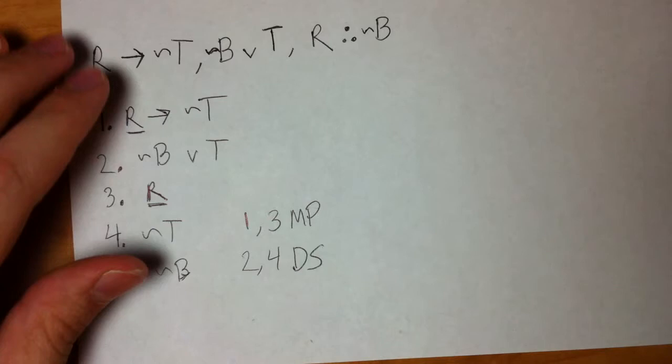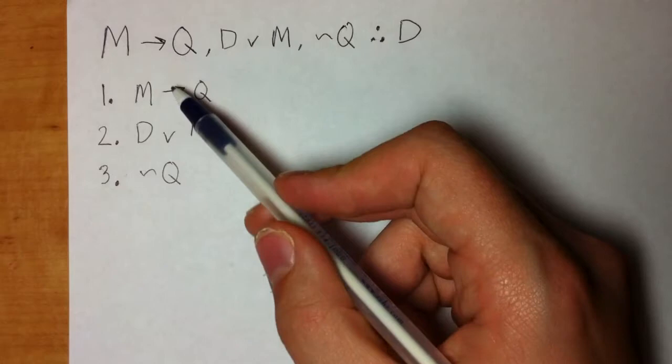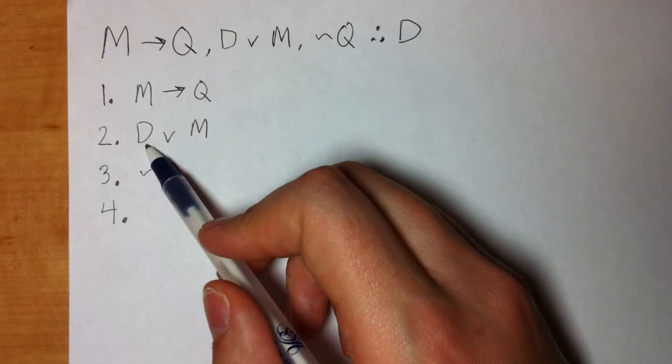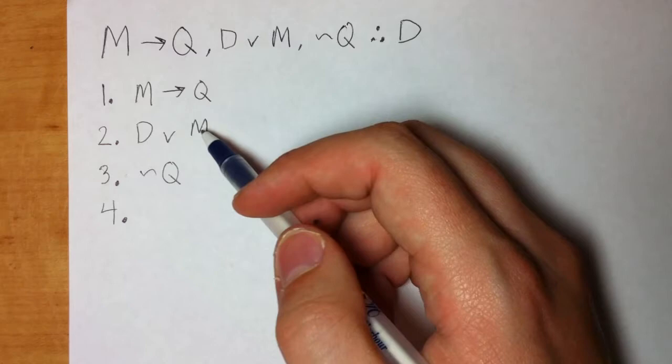So, I already set this one up. I wrote all the premises down, so our goal is to get D. So, how can we get D? Well, again, we can work through this backwards. We can use that strategy. Okay, there's D. How would I get D out of that line? What rule allows me to break up a wedge? DS, and what do I need to do? And you can work it like that. Or we can think, okay, what patterns do I have right now? What rule can I apply right now?